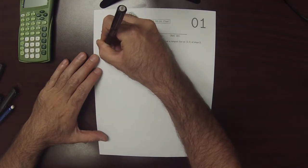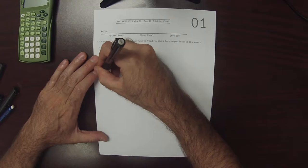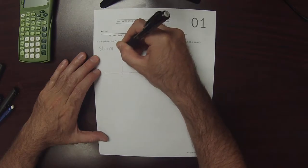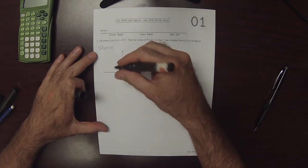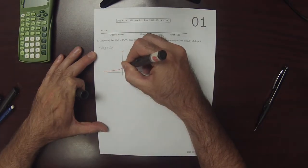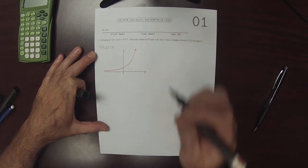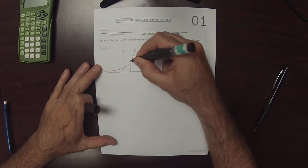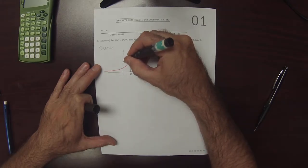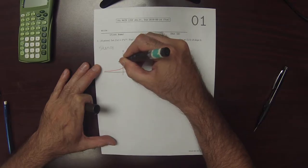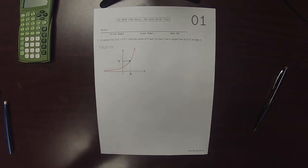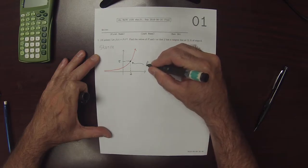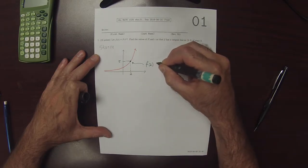So a sketch of what's going on. There is an exponential function. And at 2, the function evaluates to 5.